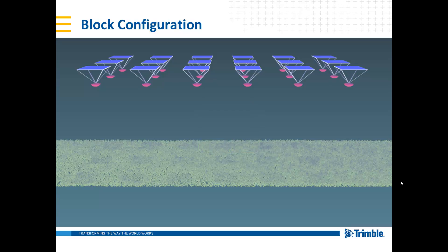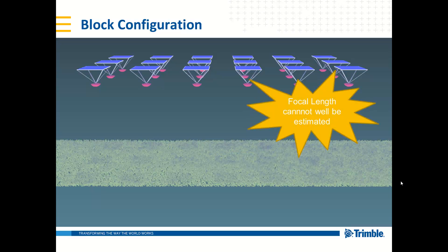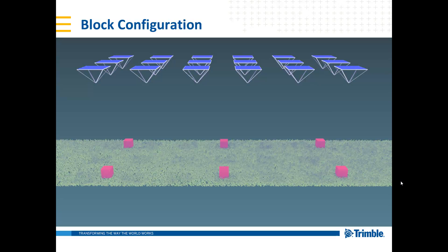The same problem exists on the other side: if we have no high-precision GNSS data — say only 6 to 10 meter position accuracy on the photos — but we do have control points on the ground, and all those control points are at a similar height with no height undulation, then we still cannot solve the unknown focal length. This block configuration is not satisfying and allows systematic errors and blunders to be introduced into the block, which can cause less accurate solutions that then have impact on point cloud extraction and auto mosaicking.